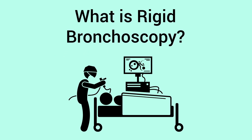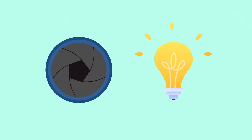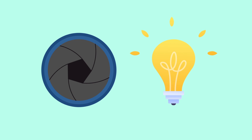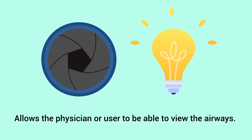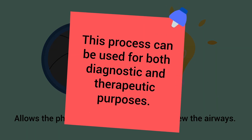In general, a bronchoscopy is a procedure where a tube known as a bronchoscope is inserted into the airways of the lungs. It contains a camera and a light source that allows the physician or user to view the airways. This process can be used for both diagnostic and therapeutic purposes.